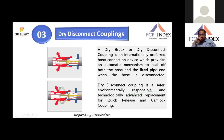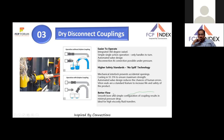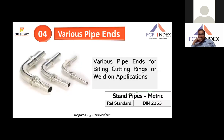Dry disconnect couplings — also called dry break couplings — are internationally preferred hose connection devices that automatically seal both the hose and fixed pipe when disconnected, resulting in zero oil seepage. They are easy to operate with a single 360-degree turn action, can connect and disconnect under pressure, and have a mechanical interlock to prevent accidental opening. Castings are in SS316 to ensure maximum strength, better flow, and a smooth bore configuration.